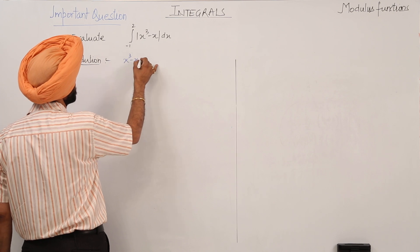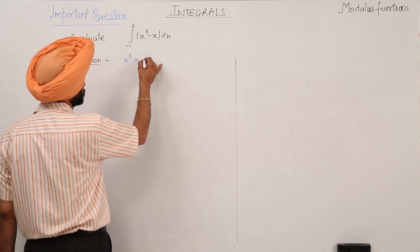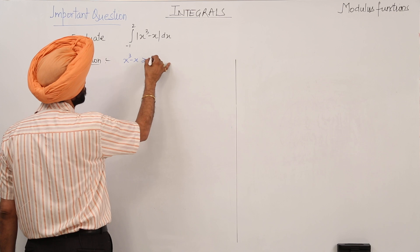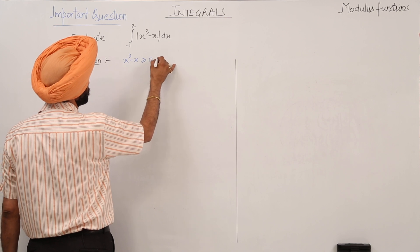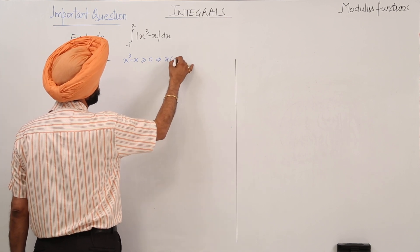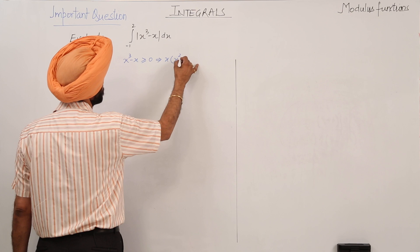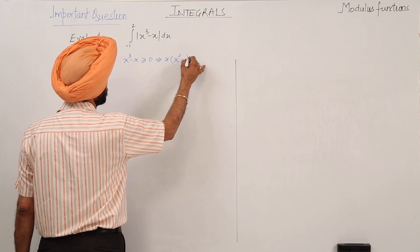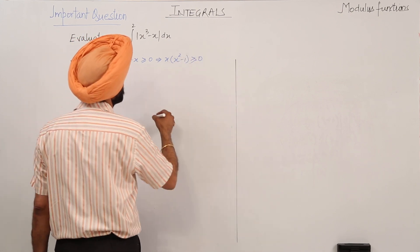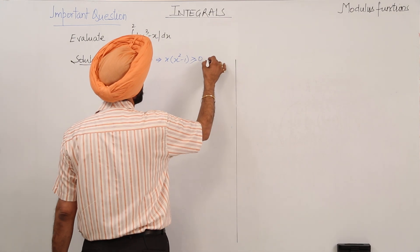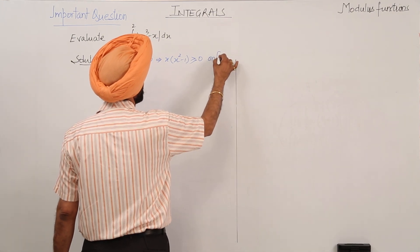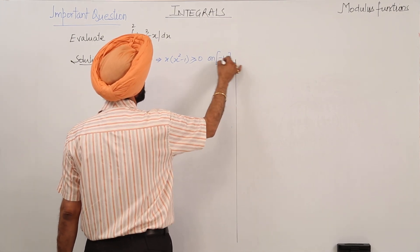We need x³ - x ≥ 0, which implies x(x² - 1) ≥ 0 on the interval (-1, 0).